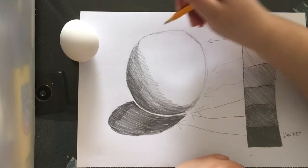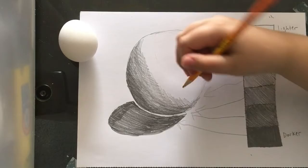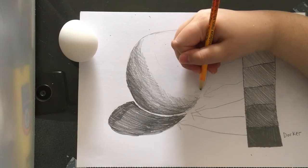I'm using my guide on the side to help inform, okay, about halfway up my sphere, where, as I look at the object, it's going to be about that value in the middle.